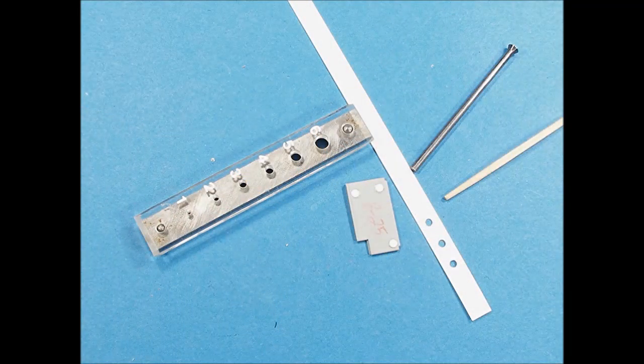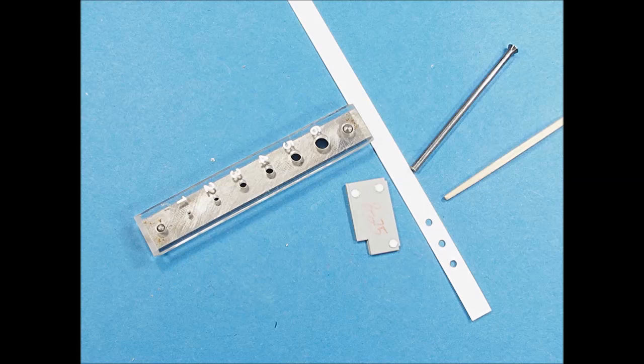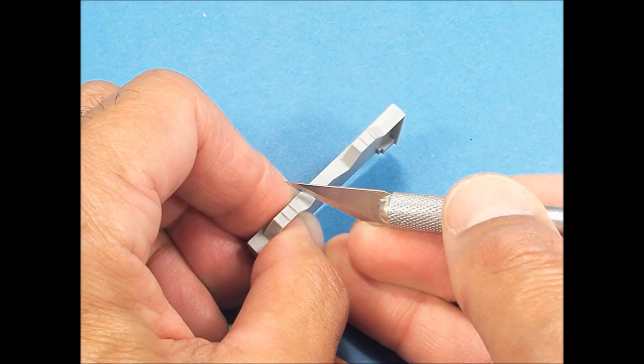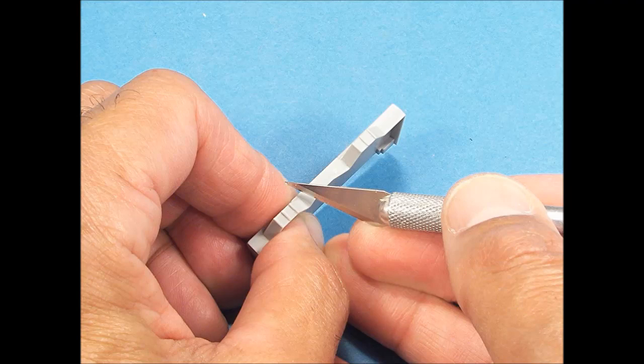Mold punch outs on parts can sometimes be filled with discs made using a punch tool. The discs are super glued into place and then the surface is sanded smooth. To remove the mold lines on this part, I used a number 11 exacto blade held at about a 45 degree angle.